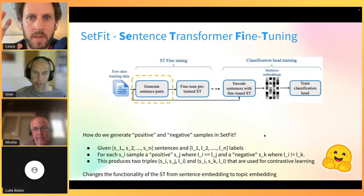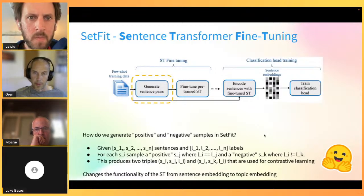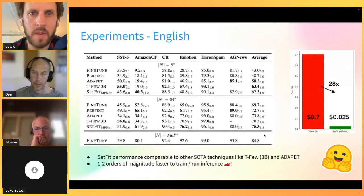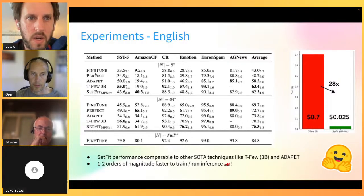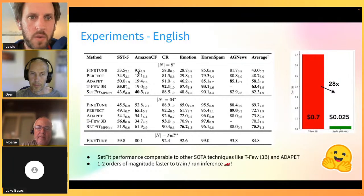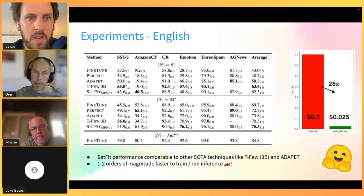The real magic of SetFit comes from this contrastive learning step - after it, you have a fine-tuned sentence transformer, and then it's just standard classification head training. In our paper experiments, we compared SetFit against several baselines. The most obvious baseline is fine-tuning a RoBERTa Large model across diverse datasets: sentiment analysis, counterfactual reasoning, customer review classification, emotion detection, and topic classification. With only 8 labeled examples per class, vanilla transformer performance is usually quite low - averaging around 43%.